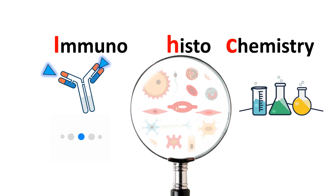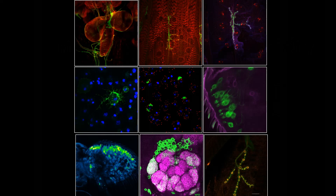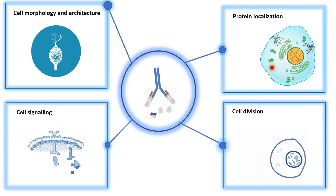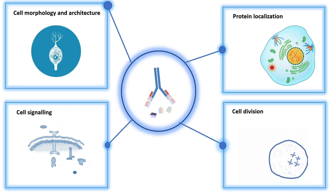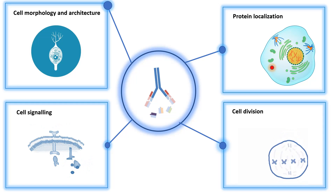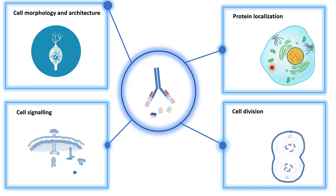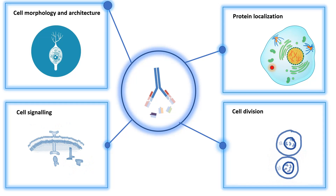Immunohistochemistry is used for a variety of purposes. You might be familiar with images of cells and tissues stained with antibodies and specific cellular markers, which highlight cellular architecture or protein distribution. IHC can be widely used to visualize protein localization, life processes like cell division, cell signaling aspects, cell signaling pathways, and to trace cell morphology and determine cellular architecture.